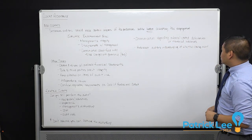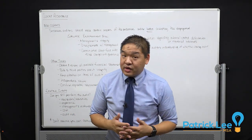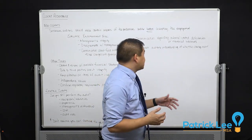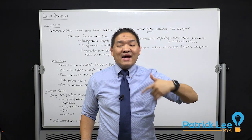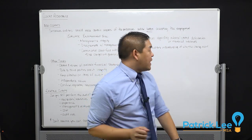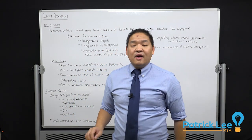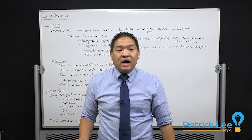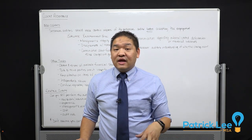We'll also ask about communications regarding internal control deficiencies or material weaknesses. Do they have good internal controls? What are some of the weaknesses in their internal controls? All of this data helps us get a better idea of the engagement risk for this client. And finally, the predecessor auditor's understanding of why the change occurs — let's be straightforward: why do you think your client is now coming to us to do their audit?